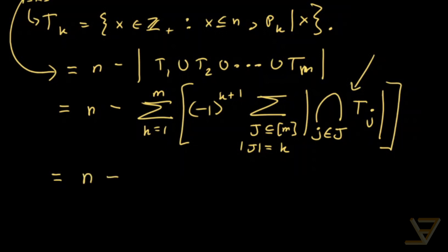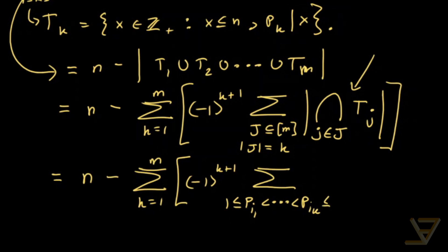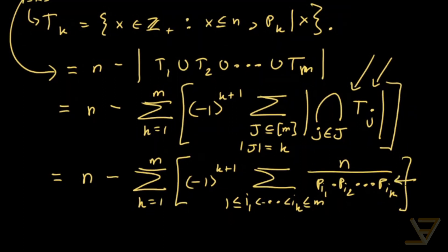So we have n minus the sum of k equals 1 through m as before, and we have the alternating signs as before as well. But now what the sum becomes, and it's more transparent now, is that it's iterating over pi1 all the way through to pik indexed between 1 and m. And what we have is this intersection here, the cardinality of this intersection is n divided by pi1 times pi2 all the way through to pik. And that's because that's the number of multiples of this denominator less than or equal to n.